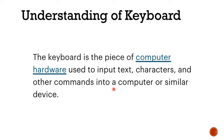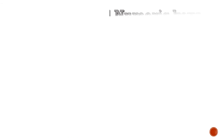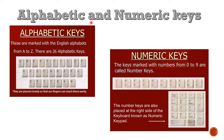There are different keys on the keyboard. Students, there are different types of keys. The alphabet keys are written from A to Z — all English alphabets which we call alphabet keys. The numeric keys are written from 0 to 9 — all counting numbers.